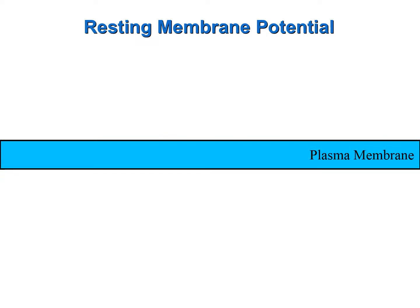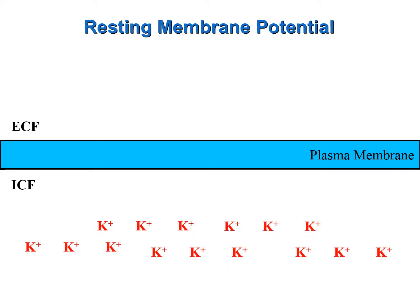This blue structure in the middle of your screen represents the plasma membrane. The extracellular fluid — that is the fluid that is outside of the cell — is here on this side of the plasma membrane. And on this side we have the intracellular fluid, or cytosol. There are potassium ions located both inside the cell and outside the cell. However, the concentration of potassium ions is much greater inside of the cell compared to the concentration of potassium ions outside of the cell.